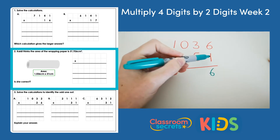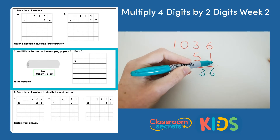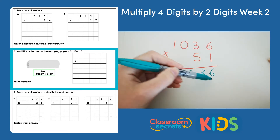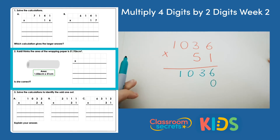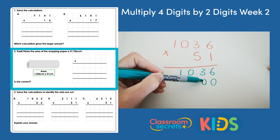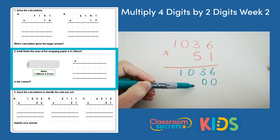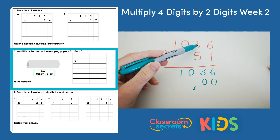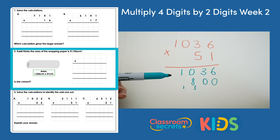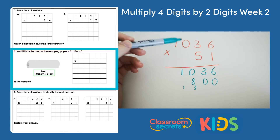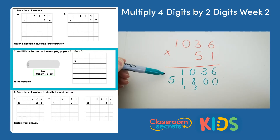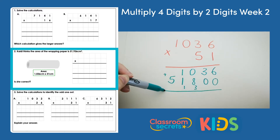So we do our ones first. 6 multiplied by 1 is 6. 1 and 3 makes 3. 1 and 0 is 0. And 1 times 1 is 1. Next we move on to our tens number, not forgetting to put your 0 in the ones column. 5 and 6 make 30, so we pop a 0 in the tens column and exchange the 3. Then 5 multiplied by 3 is 15, add 3 is 18, so we exchange the 1 in the thousands column. 5 multiplied by 0 is 0, plus that extra 1 gives us 1. And 5 multiplied by 1 is 5.